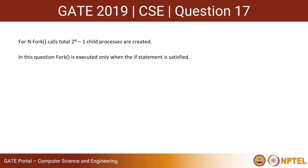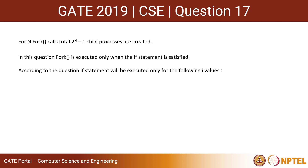In this question, the fork call is executed only if the if condition is satisfied, and the if statement will be satisfied only for values of i which are 0, 2, 4, 6, and 8. So the fork system call will be invoked a total of five times, and hence the total number of child processes being created will be 2 to the power 5 minus 1, which equals 31.